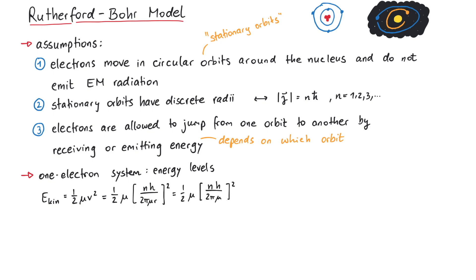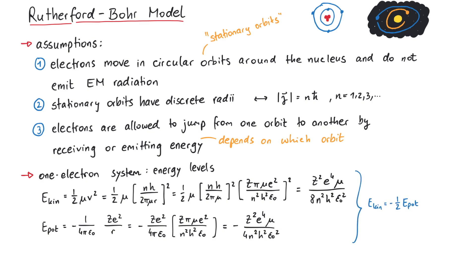It looks complicated, but it's just evaluating the classical kinetic energy and the Coulomb potential energy using the relations for v and r that we derived earlier. We see that the kinetic energy is in fact exactly minus one-half times the potential energy, so the total energy is simply given by one-half times the potential energy.